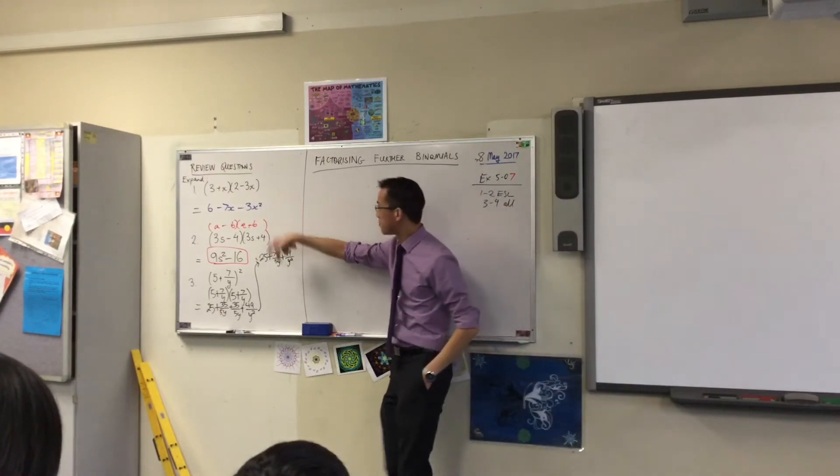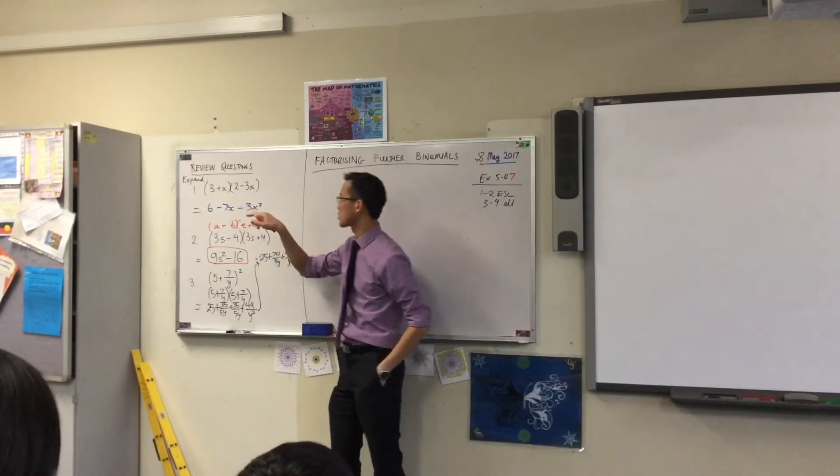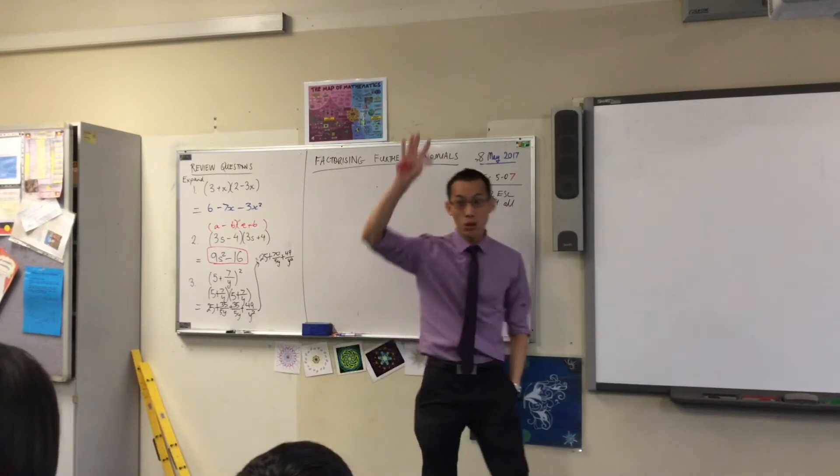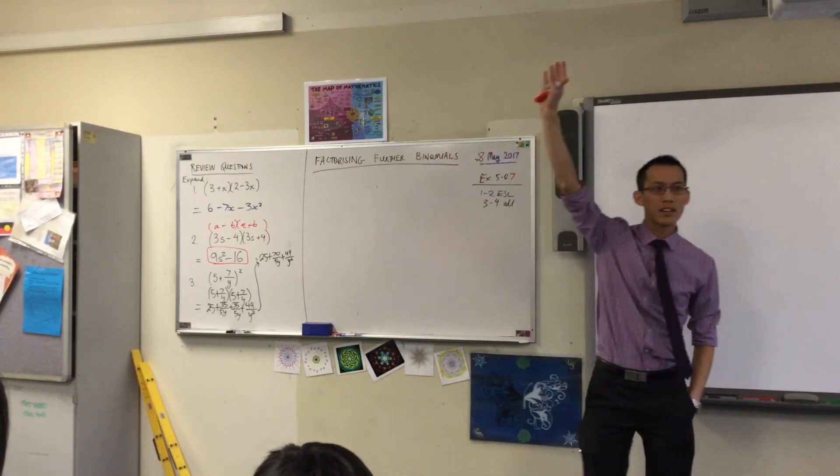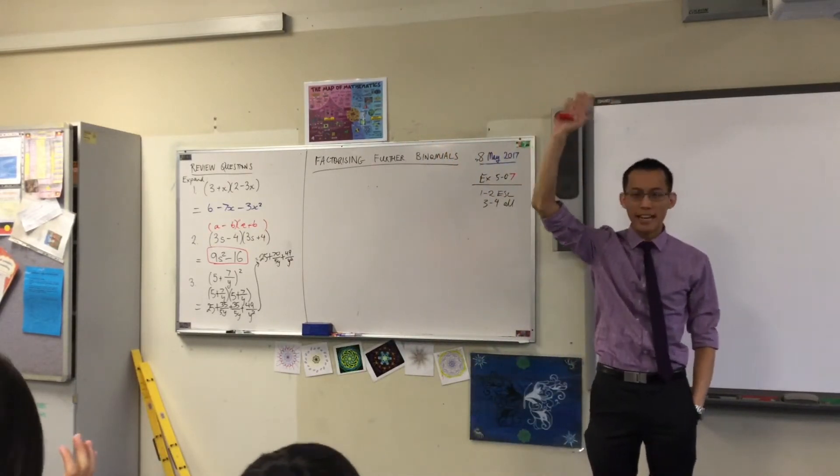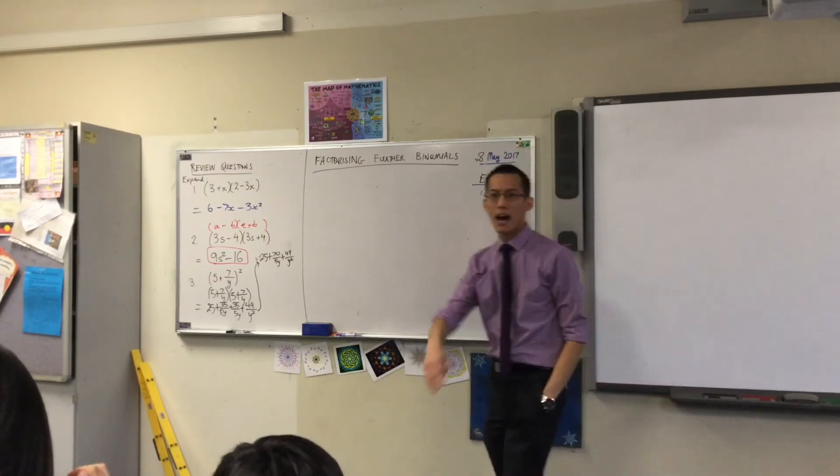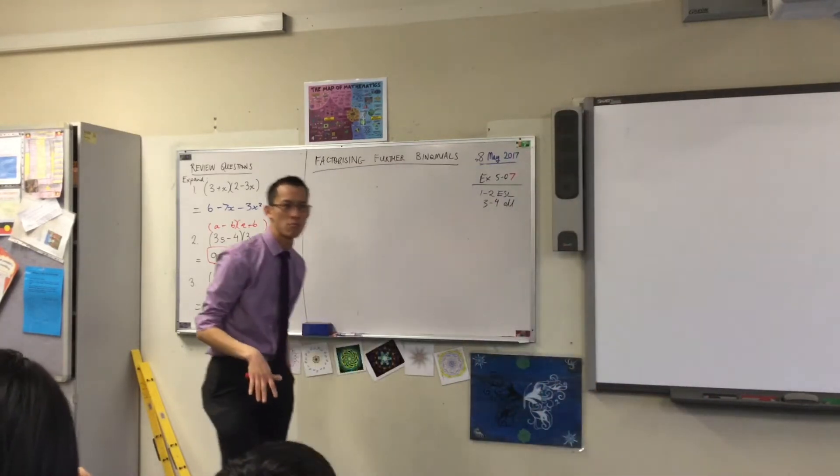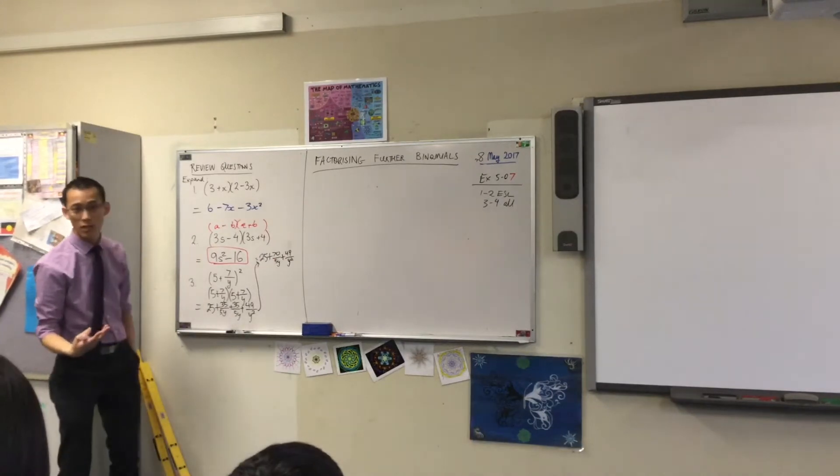Let's have a look at the top one. 6 minus 7x minus 3x squared. Before we scrutinize it, who got the same answer? Hands up straight. The first one? Okay, a good number. Thank you. Hands down. Are there any shortcuts for this first one?